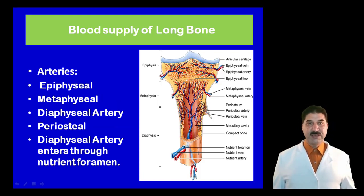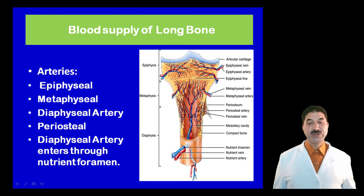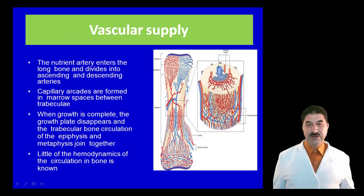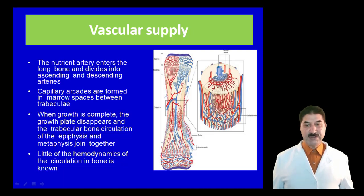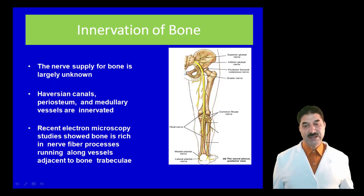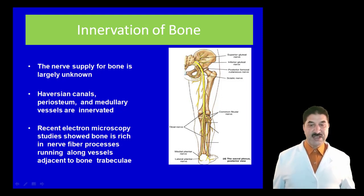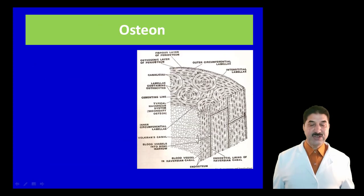Regarding the blood supply of bone: bone is richly vascular, supplied by epiphyseal, metaphyseal, diaphyseal (nutrient), and periosteal arteries. The diaphyseal artery enters through the nutrient foramen, divides into ascending and descending branches, and capillary arcades form in marrow spaces between trabeculae. When growth is complete, the growth plate disappears and the trabecular bone circulation of the epiphysis and metaphysis join together. The nerve supply of bone is largely from innervation of Haversian canals, periosteum, and medullary vessels; recent electron microscope studies show bone is rich in nerve fiber processes running along vessels adjacent to the trabeculae.